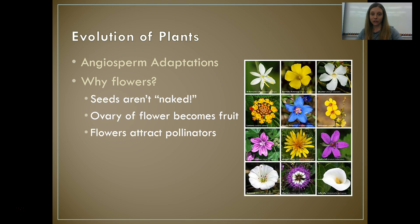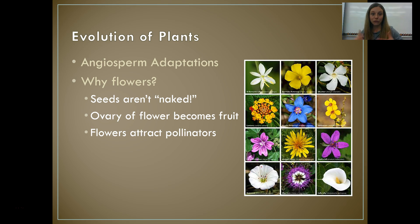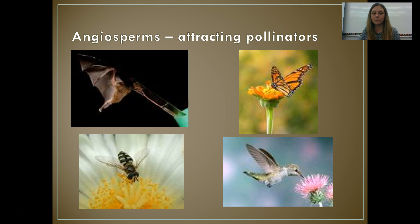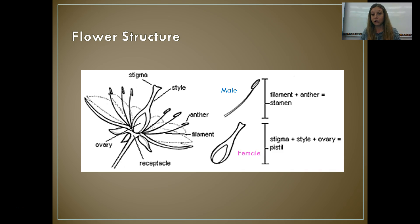Flowers attract pollinators, and the pollen is the sperm of the plant. The sperm can be carried by the pollinators. By being able to move pollen all around, chances are it's going to land on something and fertilize it. So by having a flower, you attract the pollinators, which makes you more likely to have your eggs fertilized. Think about what would attract pollinators — the color, the fragrance — and they carry that pollen on their little hairs to different flowers.